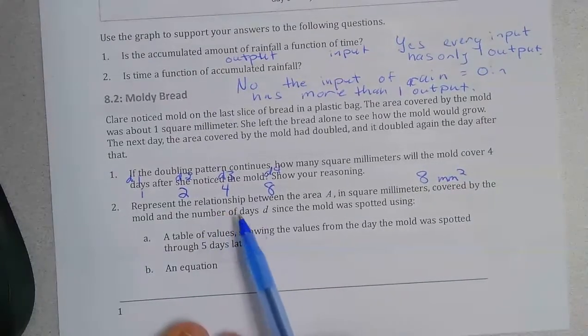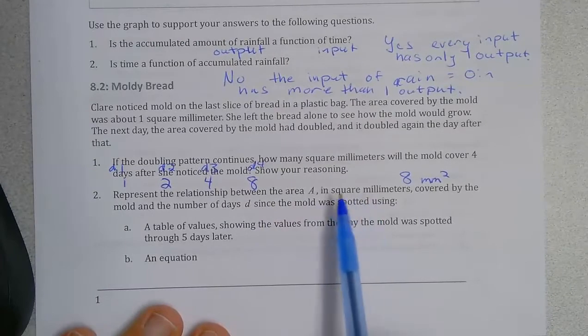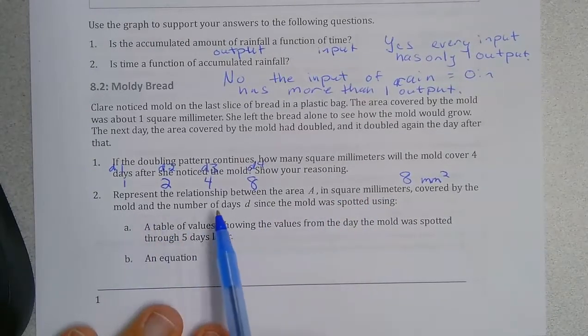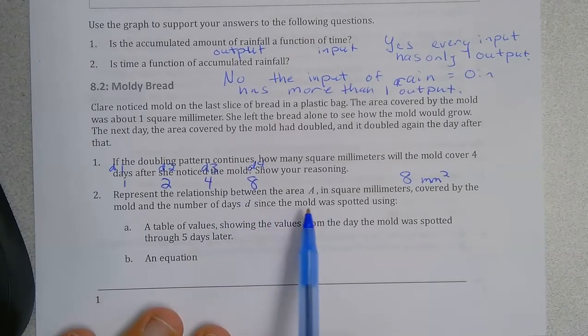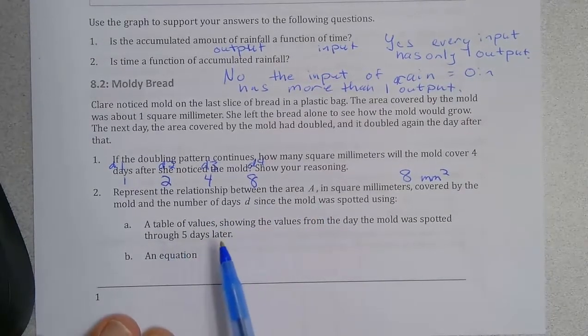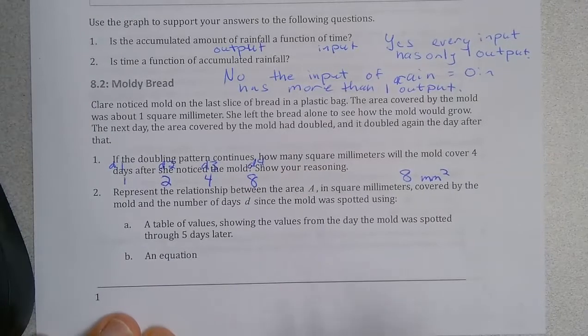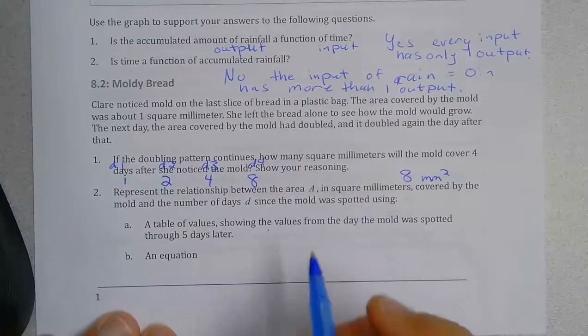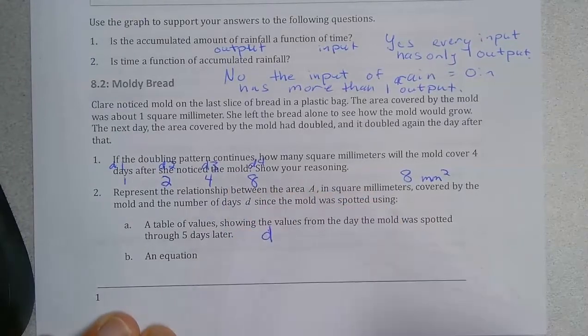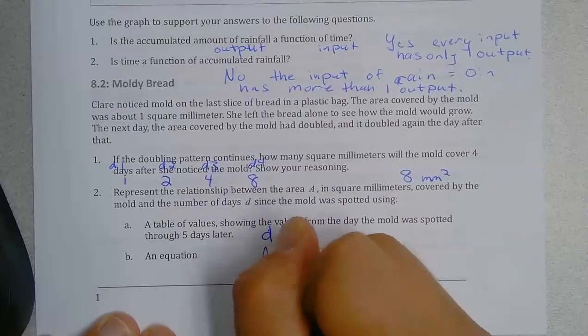So now represent the relationship between the area in square millimeters covered by the mold and the number of days since the mold was spotted using a table. So here we have the day which I'm going to write as d and then here this is the area.